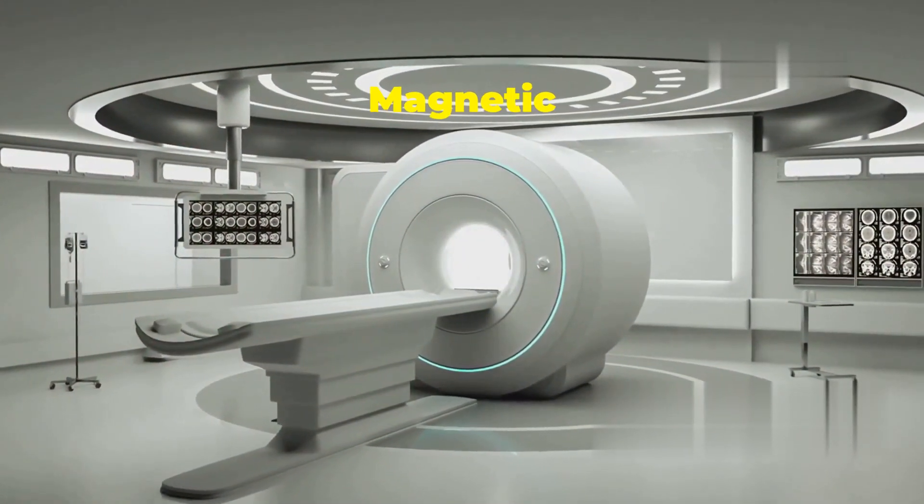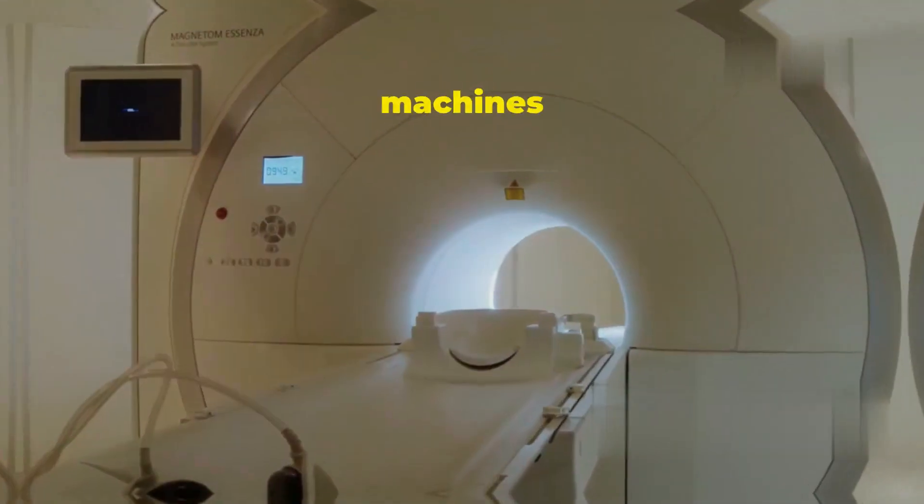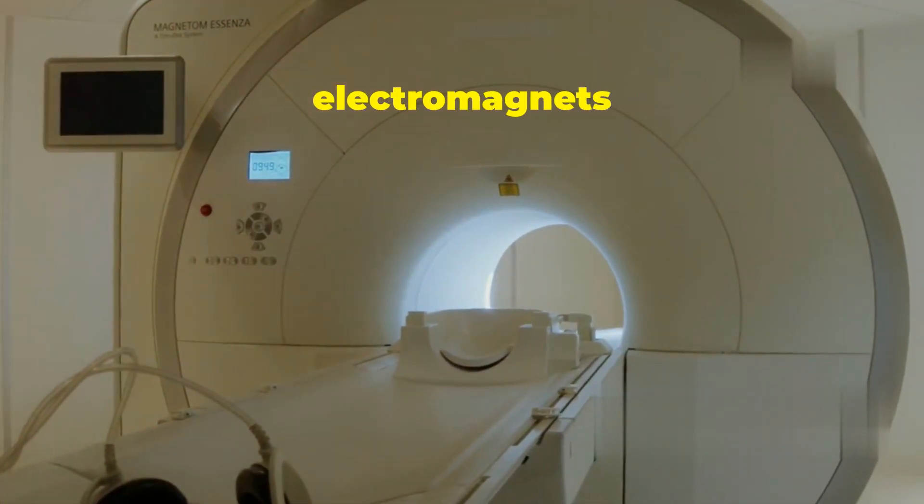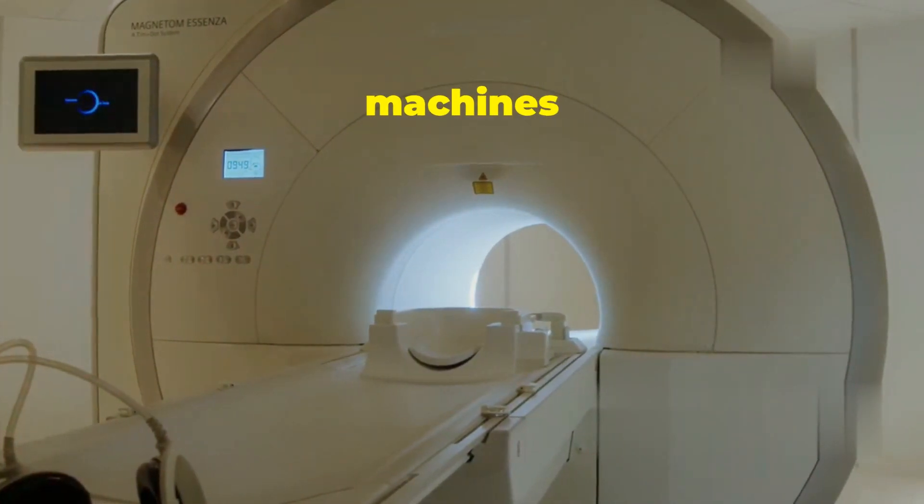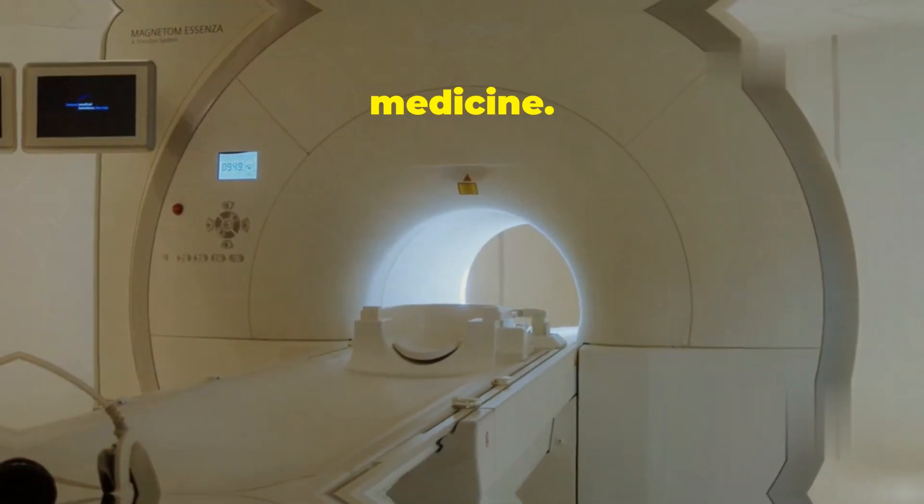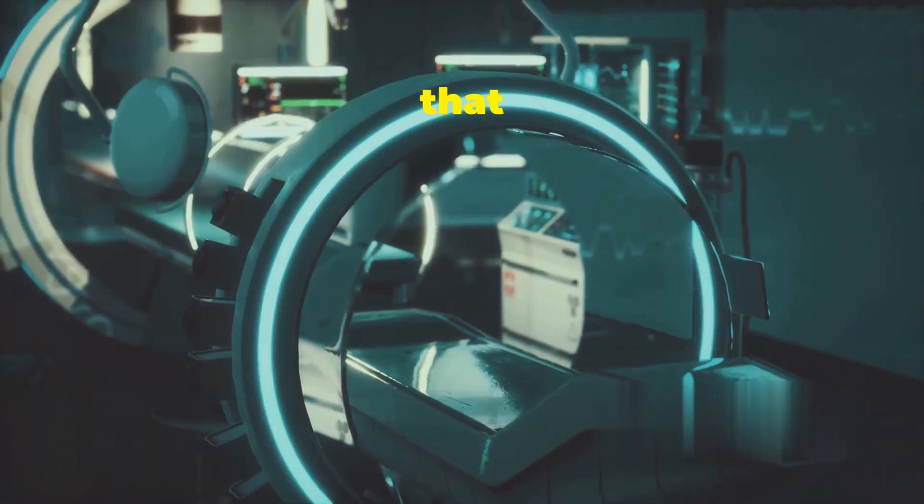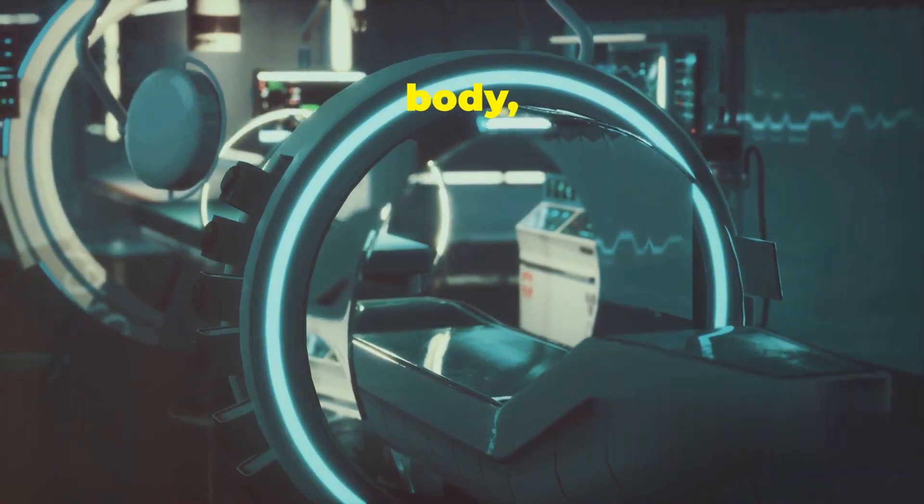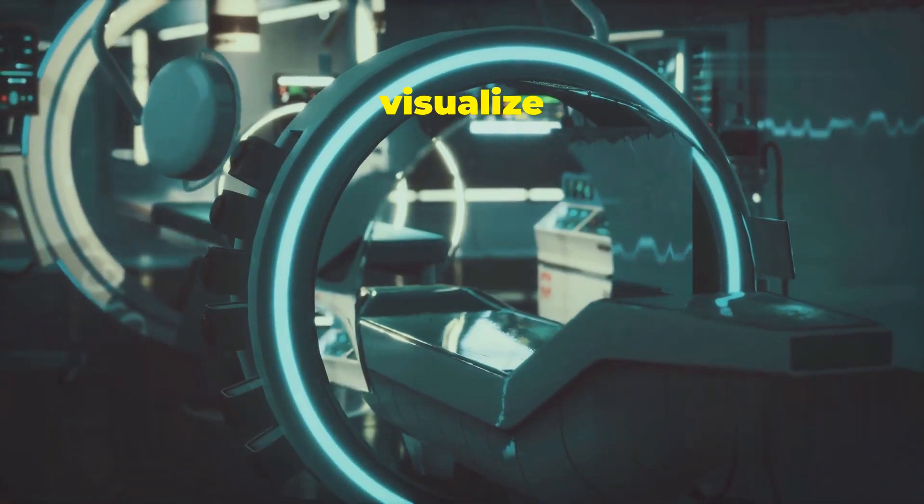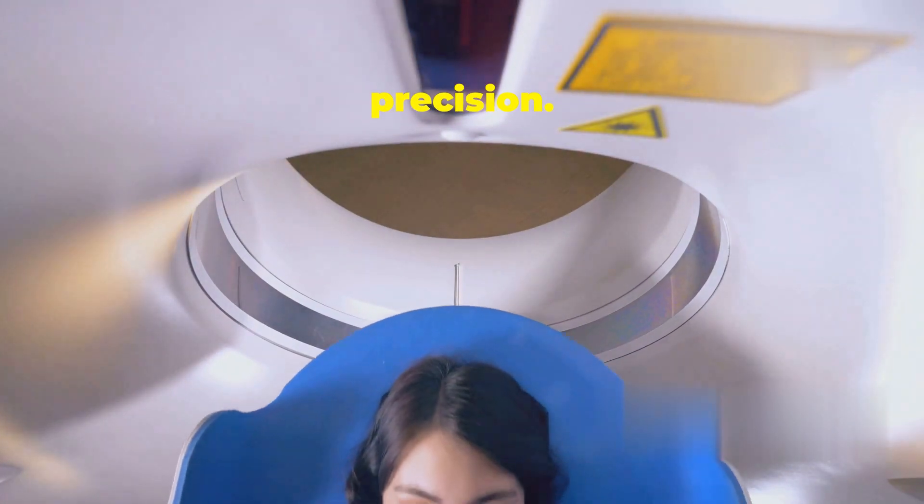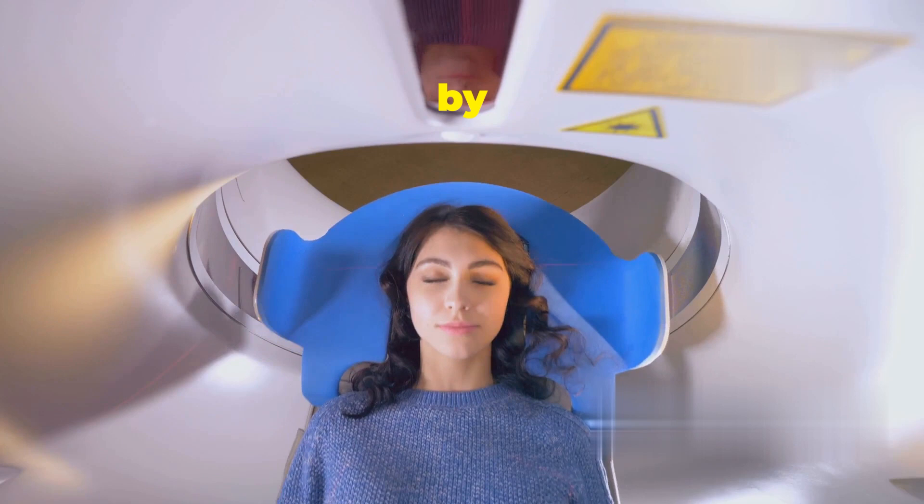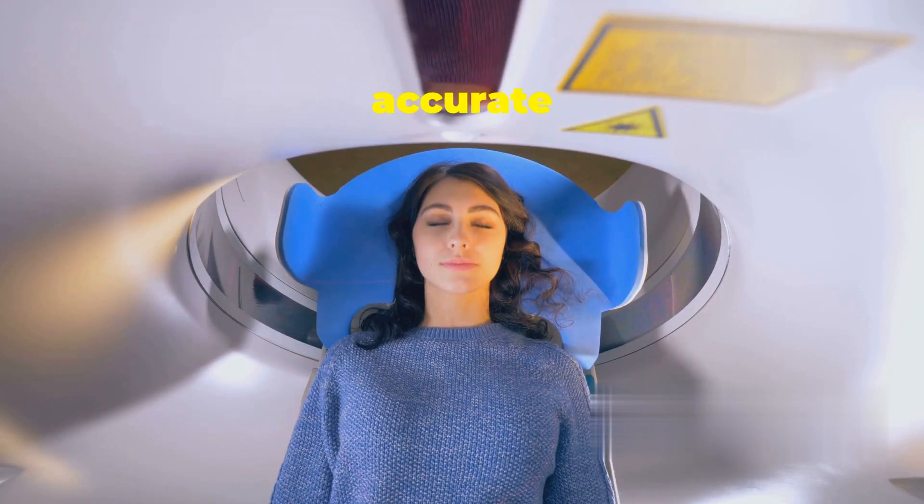MRI machines: magnetic resonance imaging or MRI machines use powerful electromagnets to generate detailed images of our internal organs. These machines are indispensable in modern medicine. These magnets create a strong magnetic field that aligns the water molecules in our body, allowing doctors to visualize tissues and diagnose medical conditions with incredible precision. The clarity and detail provided by MRI scans are crucial for accurate medical diagnoses.